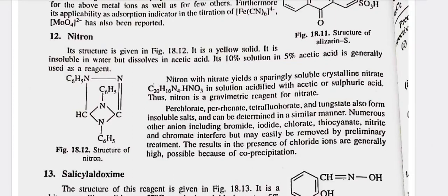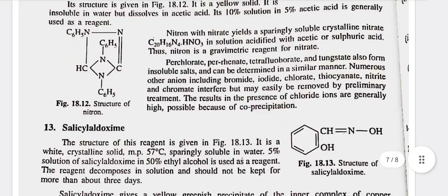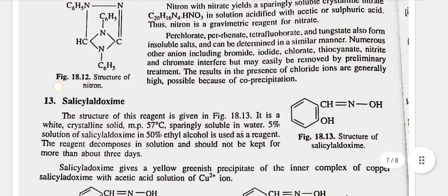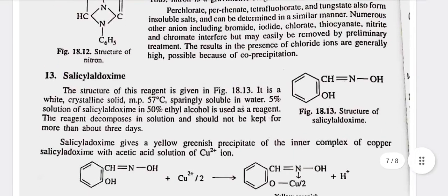Twelfth, nitron — its structure is given in figure 18.12. It is a yellow solid, insoluble in water but dissolves in acetic acid. A 10% solution in 5% acetic acid is generally used as a reagent. Nitron with nitrate yields a sparingly soluble crystalline nitrate C20H16N4·HNO3 in solution acidified with acetic or sulfuric acid. Thus, nitron is a gravimetric reagent for nitrate. Perchlorate, tetrafluoroborate, and tungstate also form insoluble salts and can be determined in a similar manner. Numerous other anions, including bromide, iodide, chlorate, thiocyanate, nitrate, and chromate, interfere but may easily be removed by preliminary treatment. The results in the presence of chloride ions are generally high, possibly because of co-precipitation.